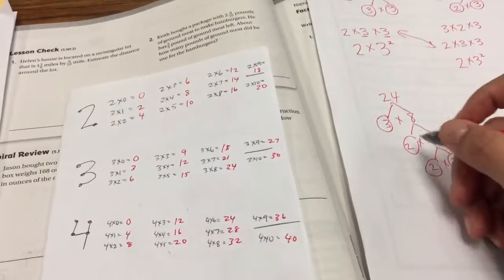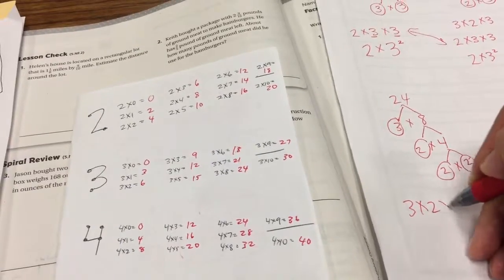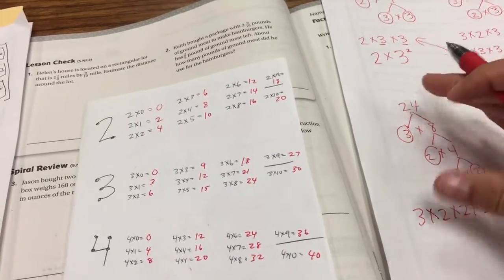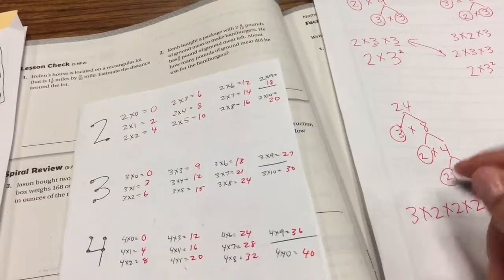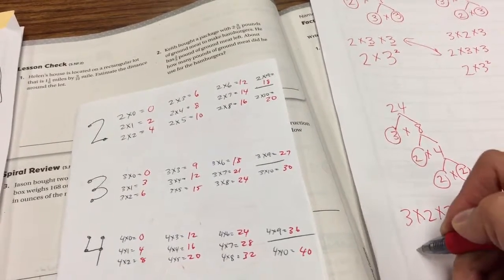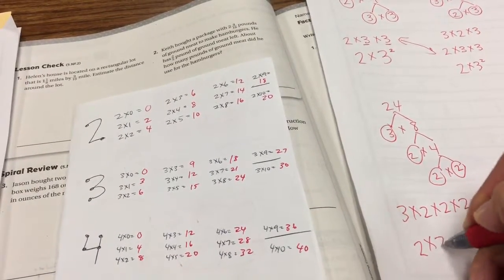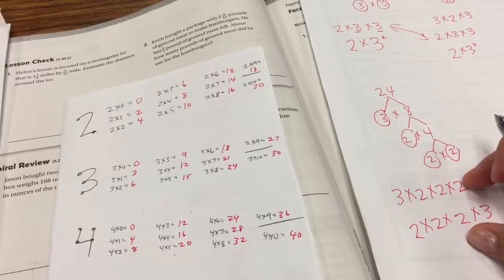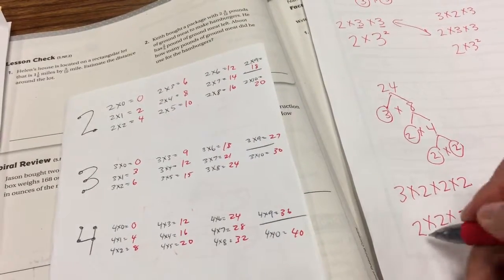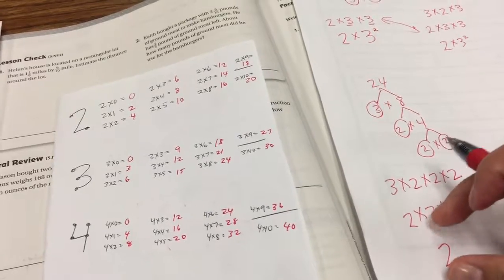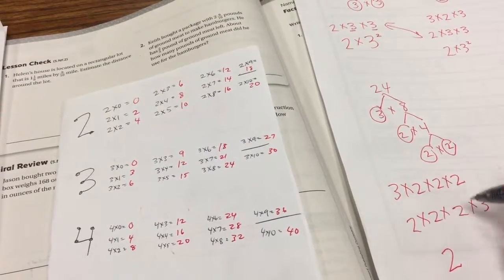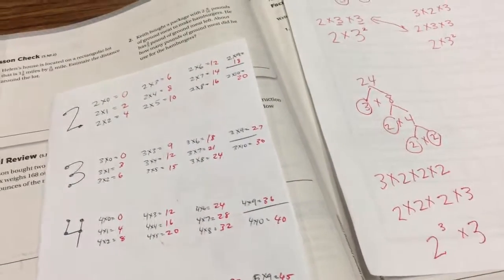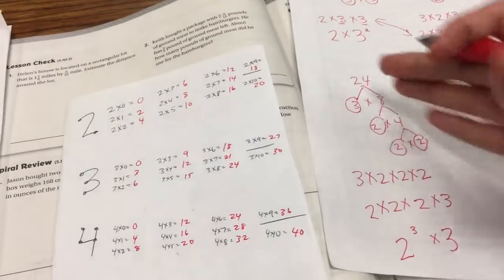So for this one, you can see we have 3 times 2 times 2 times 2. And it's easiest if you circle when you hit a prime number so you don't lose any numbers. And then we want to write it in ascending order, which means least to greatest. So we're going to do 2 times 2 times 2 times 3. Once we write it in ascending order, least to greatest, we're going to write it as an exponent. So the number 2 is being repeated. So the 2 is the base number. It's the big one. And it's being repeated 1, 2, 3 times. From there, the 3 is not being repeated, so we could just times it by 3.